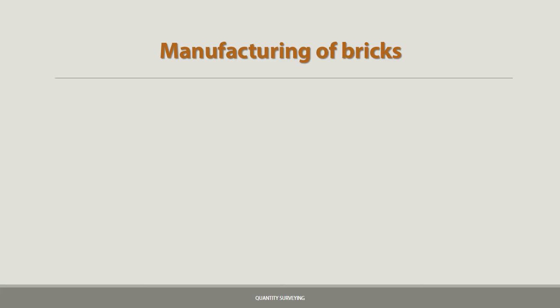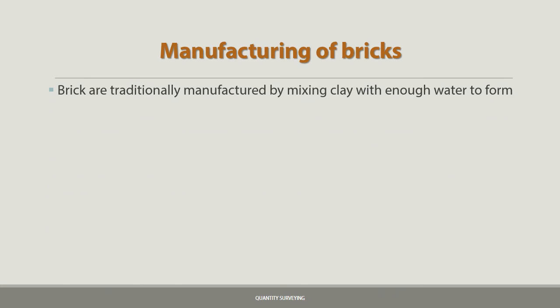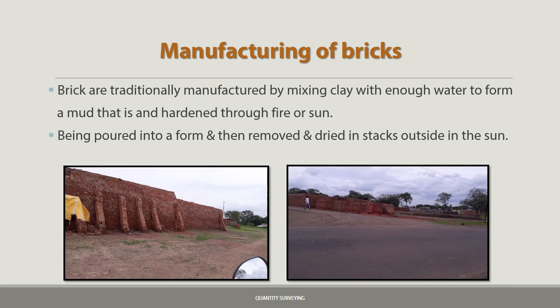Manufacturing of brick: bricks are traditionally manufactured by mixing clay with enough water to form a mud, which is then hardened through fire or sun. Some bricks are dried in the sun and some are dried in kilns — being poured into a form, then removed and dried in stacks outside or burnt in kilns.